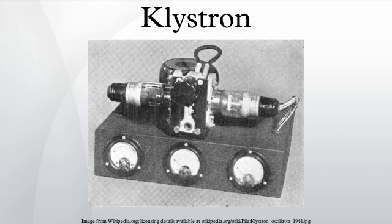During the Second World War, Hansen lectured at the MIT Radiation Labs two days a week, commuting to Boston from Sperry Gyroscope Company on Long Island. His resonator was called the Rhumbatron by the Varian brothers. Hansen died of beryllium disease in 1949 as a result of exposure to beryllium oxide.